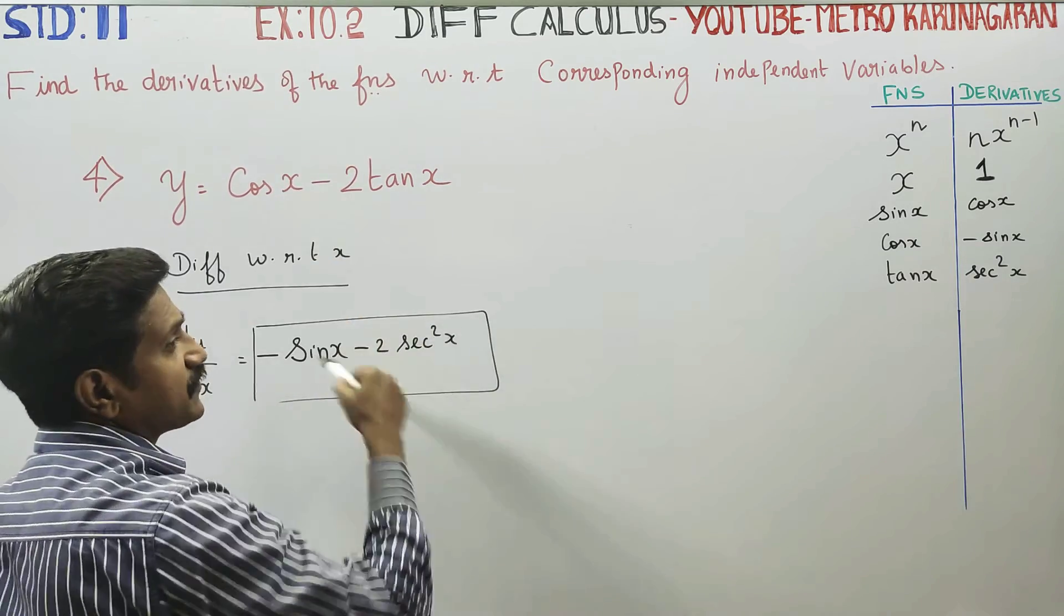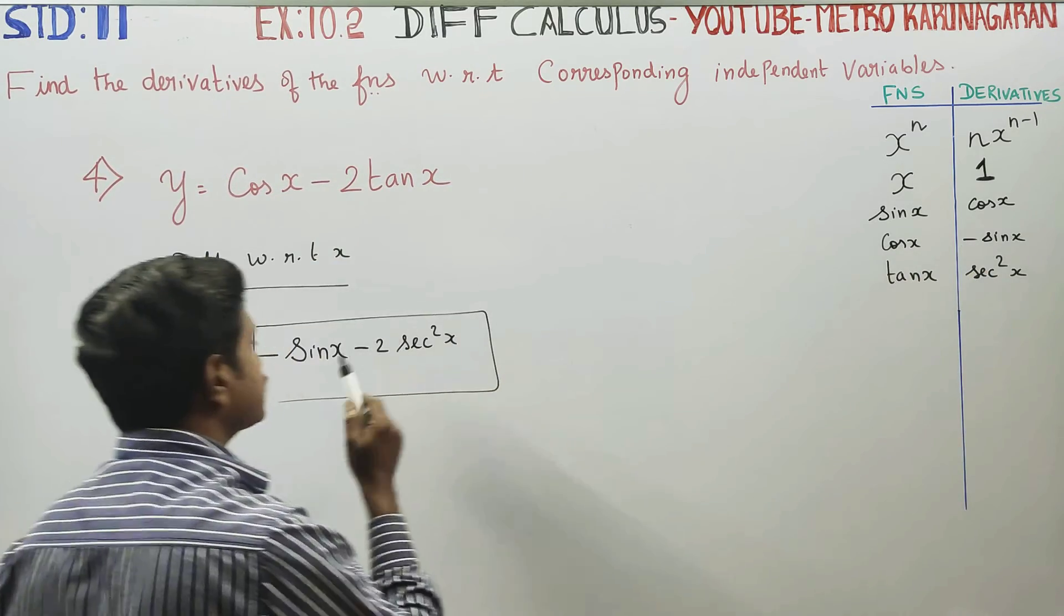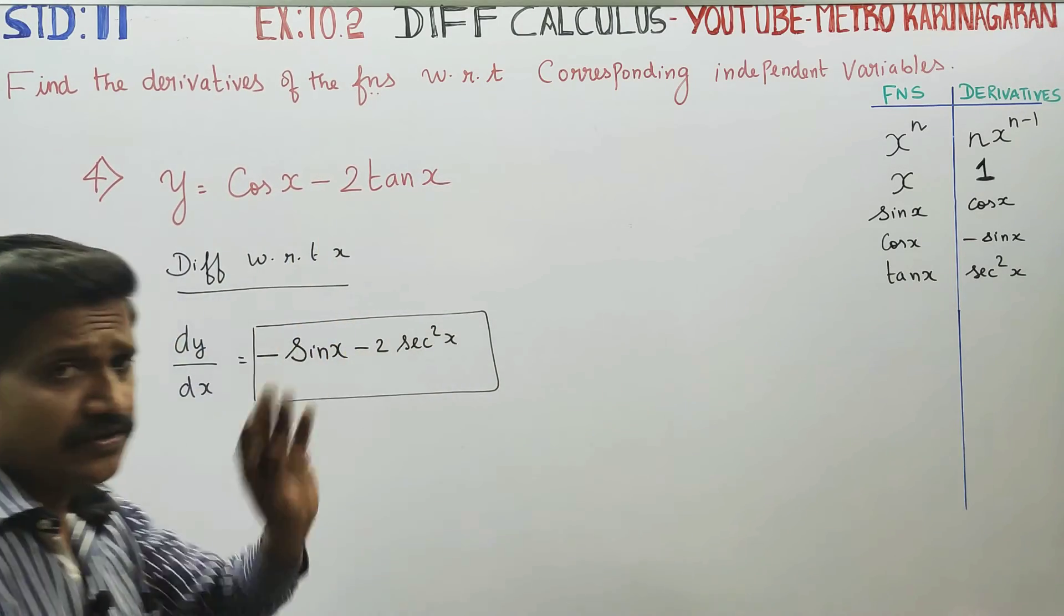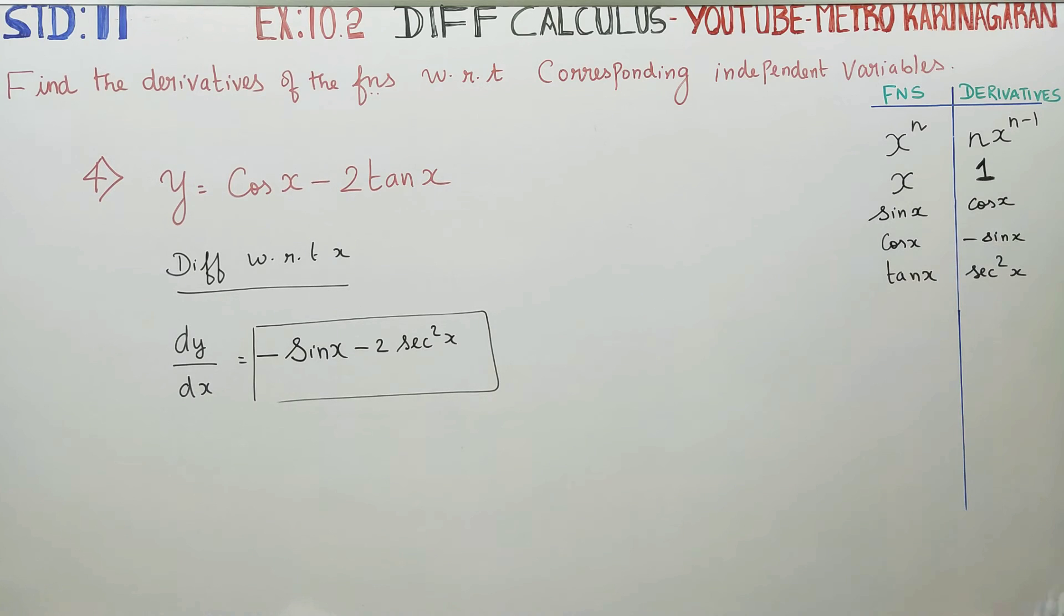So, cos differentiate pannu. Readymade answer minus sin x. Amit tan differentiate pannu. You get secant square x. In the minus 2, ithapadu yudhu disturb pannu kudad. Number multiplication leo, division leo vandu yudhu may pannu kudad.